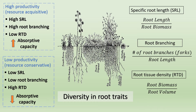So what are some of the root traits that vary among plants? The functional traits that my study focuses on include specific root length, which is calculated by root length divided by root dry biomass — an indicator of root construction cost versus absorptive capacity trade-off. Then there is root branching, measured by the number of root forks per unit root length, an indicator of root exploration and nutrient acquisition capacity. Then there is root tissue density, RTD, which is calculated by root biomass divided by root volume.